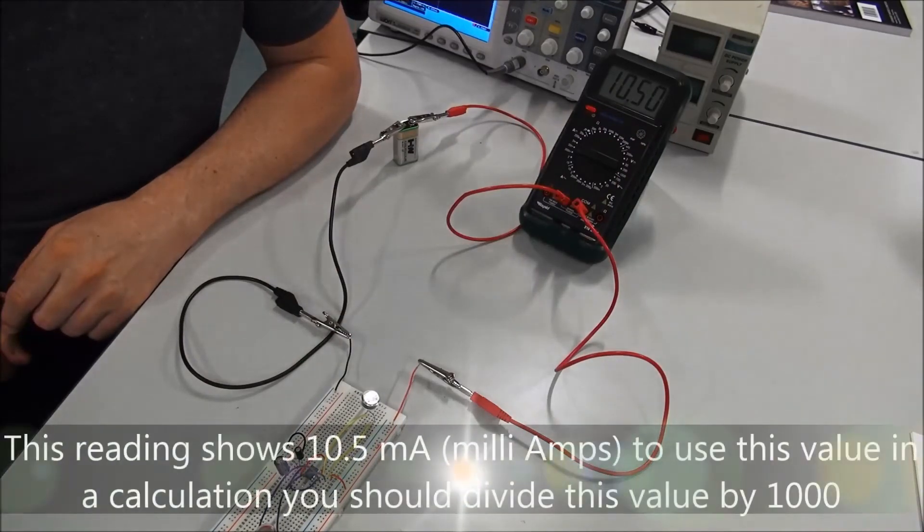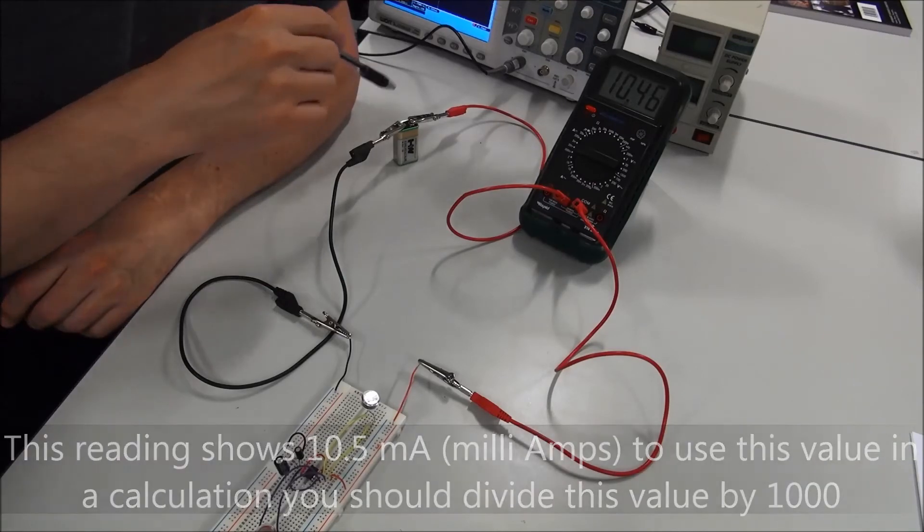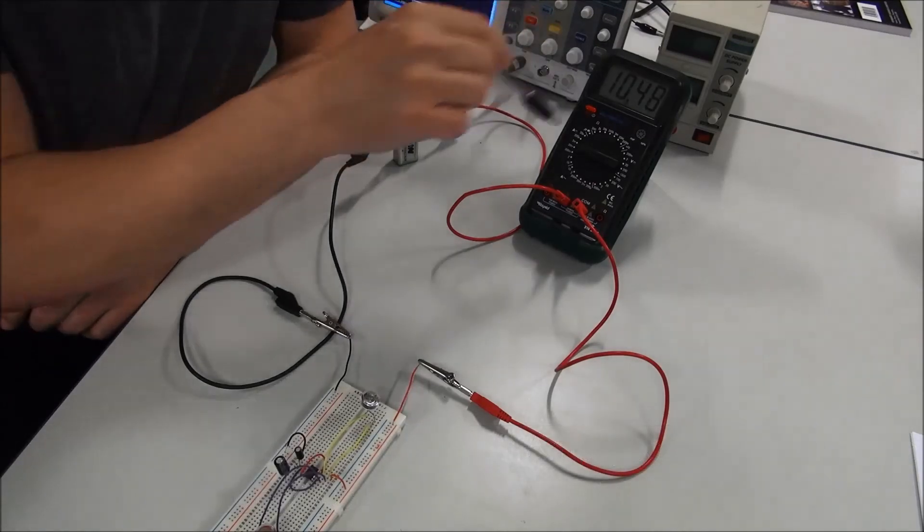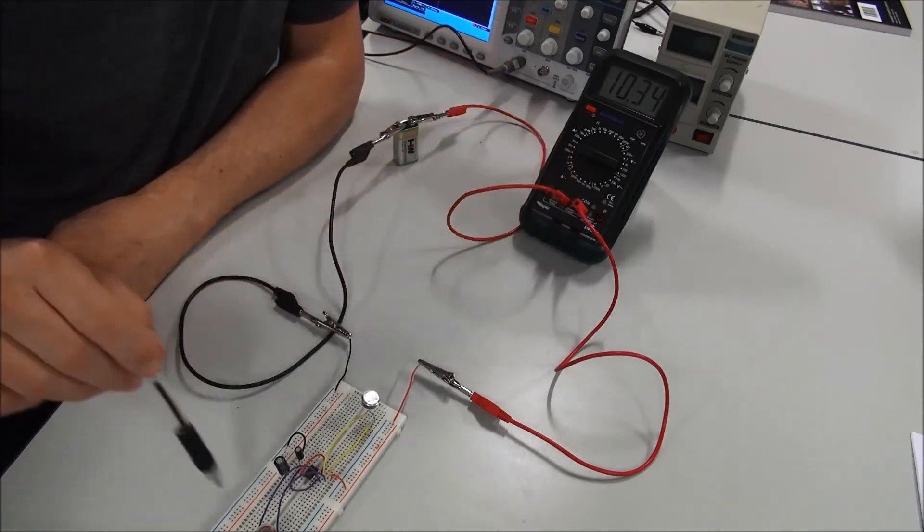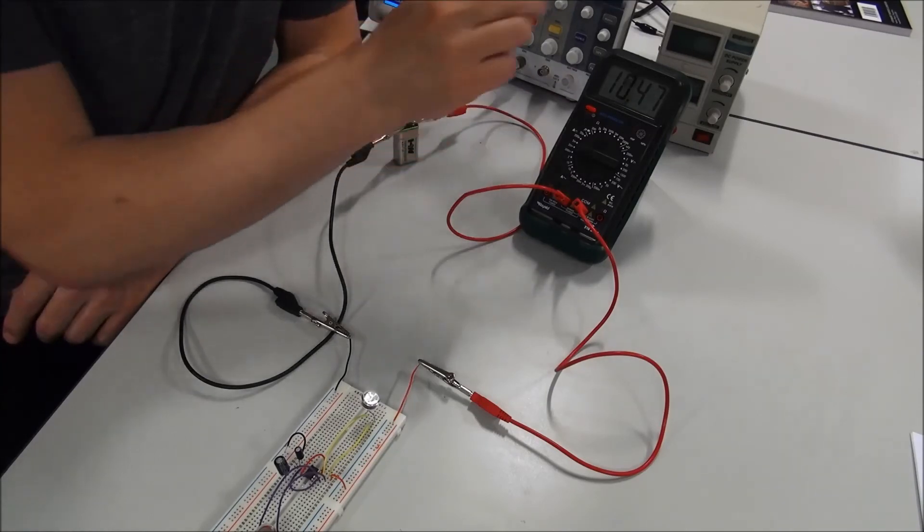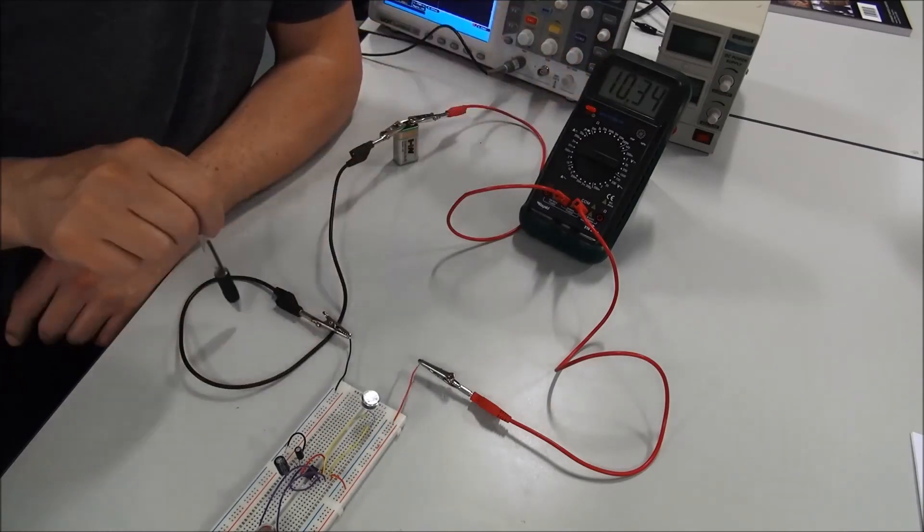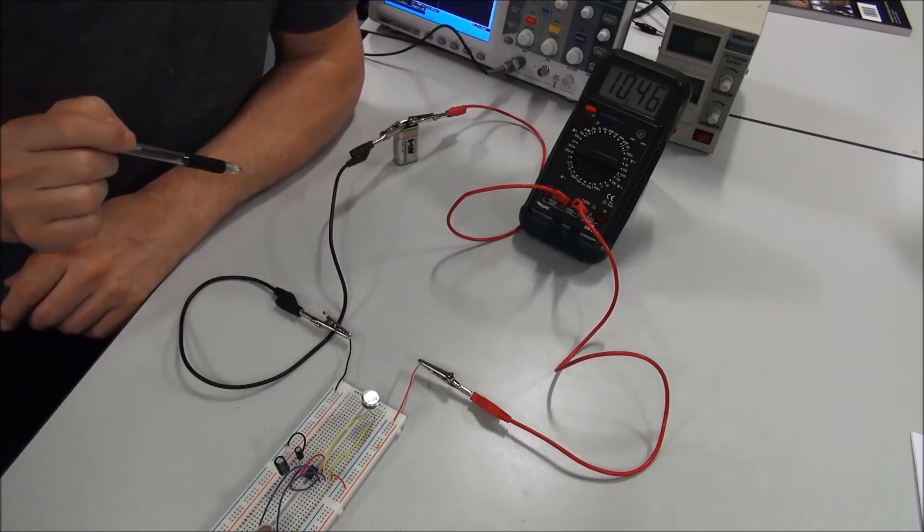We always measure current in series, so the ammeter is in series with the circuit. That means the current has to travel through the ammeter in order to get to the circuit. So battery, ammeter, circuit, battery. Whenever you measure current, it's always in series.